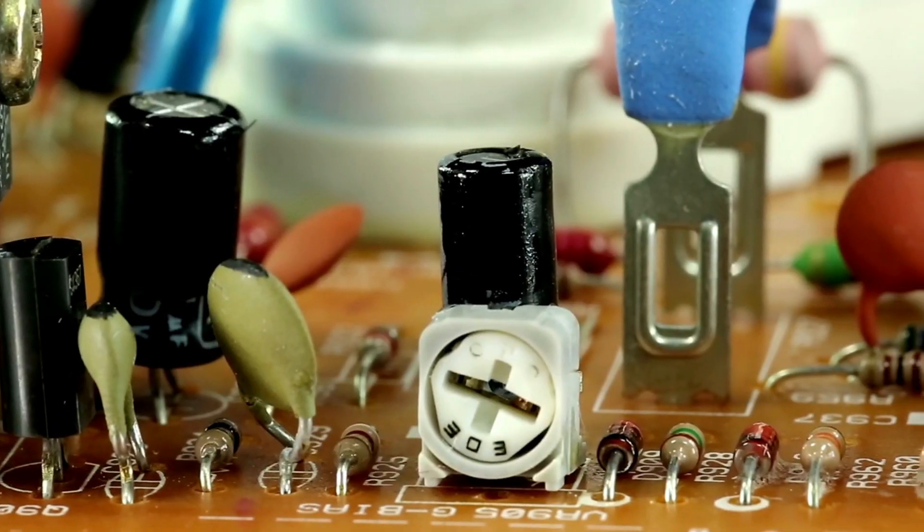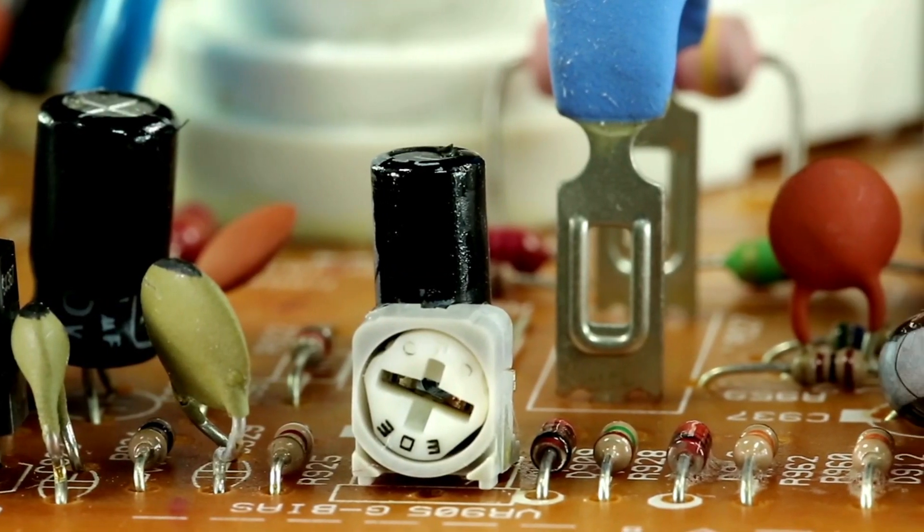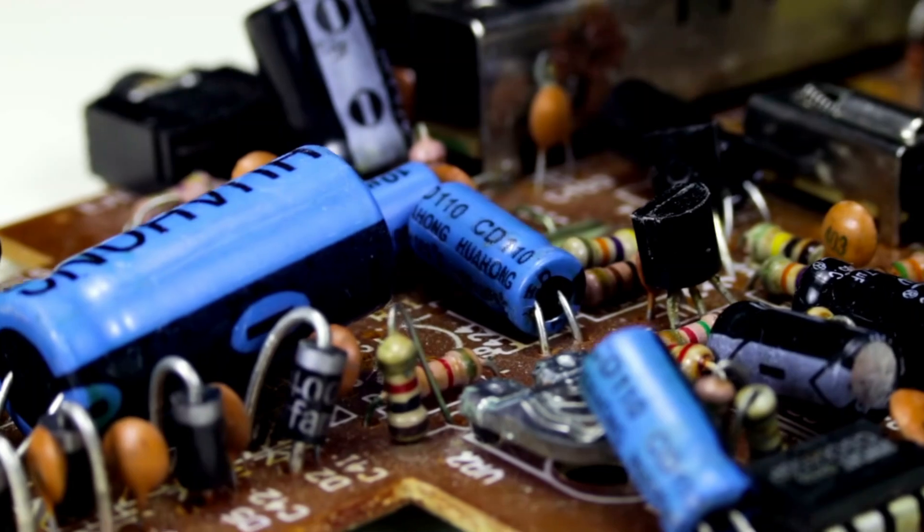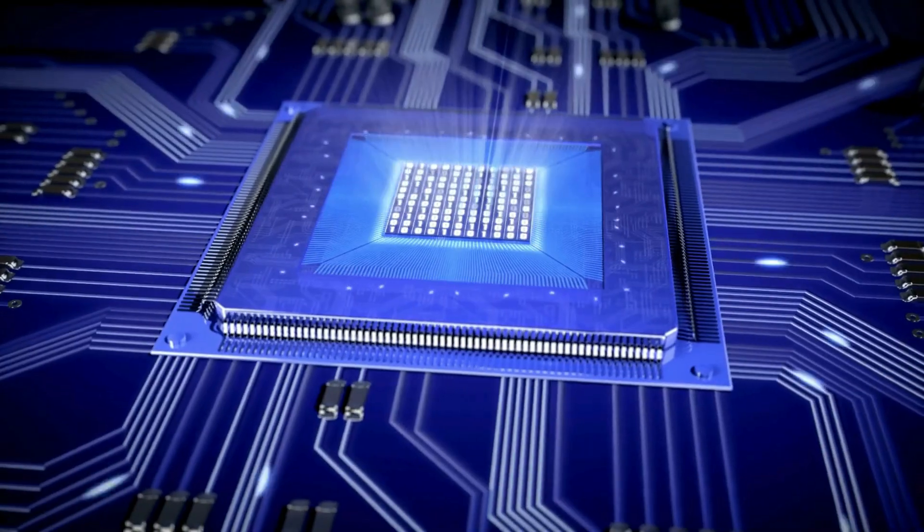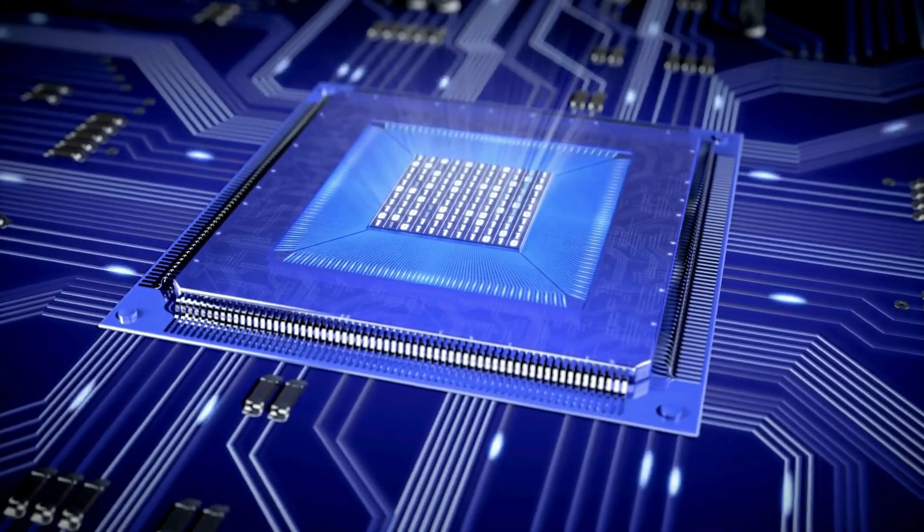Here's a step-by-step explanation of how a fuse operates within a PCB. During normal operation, the current flowing through the circuit is within the fuse's rated capacity. The fuse allows this current to pass through without any interruption.